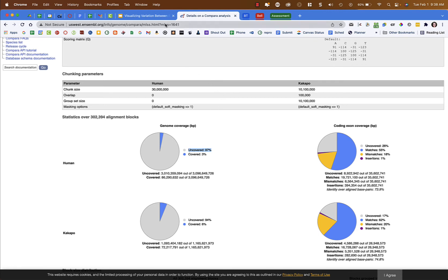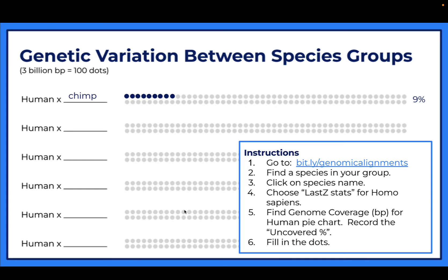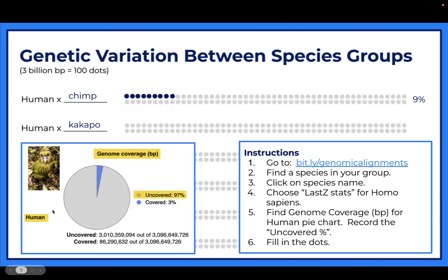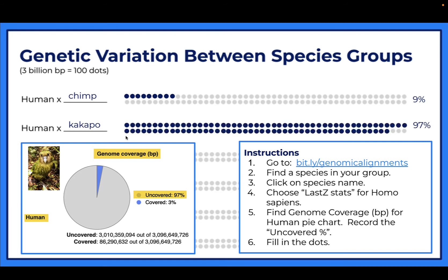Going back to the slides: I looked up kakapo, put it on the line, and from the genome coverage pie chart the uncovered percentage is 97%. Write 97 on the right side. Then fill in the dots - this is out of 100 dots, so 97% of 100 is 97 dots to color in. The kakapo is really quite cute!